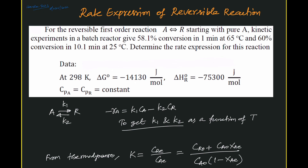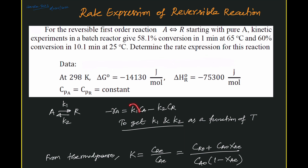Assuming the Arrhenius relation for the rate constant, and using the data of delta G and delta Hr, we can also get the connection between K1 and K2. For the Arrhenius expression, K equals K-naught times exponential of minus E divided by RT. For each rate constant we need two constants: E and K-naught. For K1 we need K1-naught and E1; for K2 we need K2-naught and E2. So in total we need four values.